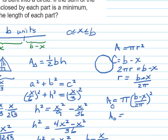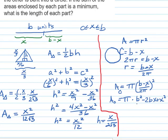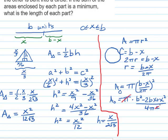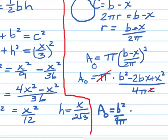Let's multiply this out. We have pi times B squared minus 2BX plus X squared, all over 4 pi squared. One of the pi's cancels, and dividing each part out, we get B squared over 4 pi, minus BX over 2 pi, plus X squared over 4 pi.